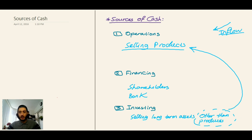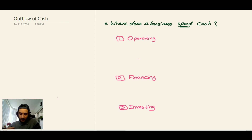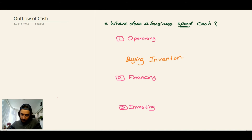Now let's talk about the outflow of cash. The same three categories will lead to outflow of cash. The first outflow of cash will be operating activities, which means buying inventory for the company to be resold later. So buying inventory will be an outflow of cash.